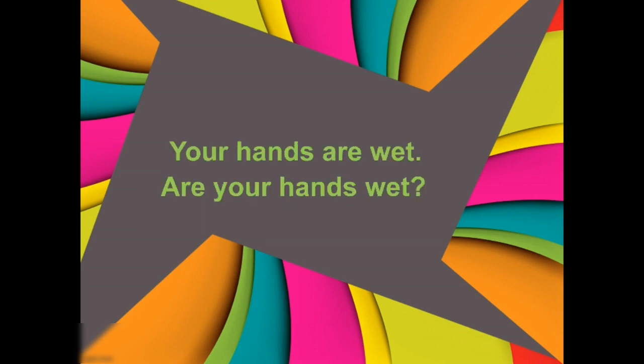Your hands are wet. This is a general statement — ki aapke haath geele hain. Your hands are wet. And when we will form a question, what we will do? Your hands, jo ki subject hain. Are, jo ki helping verb hain. And wet, jo ki aapka predicate hain. How we will rearrange them?